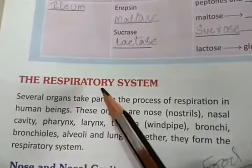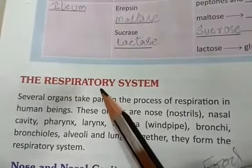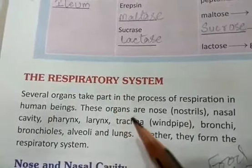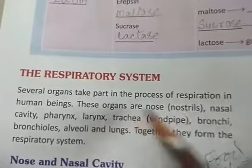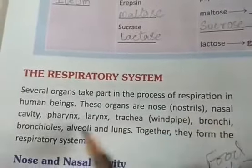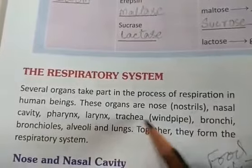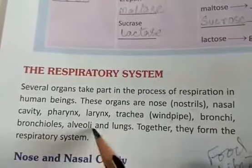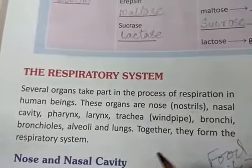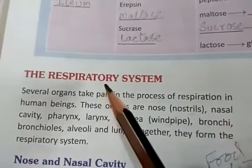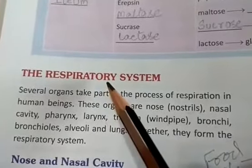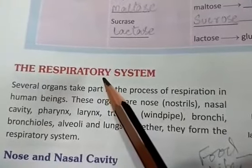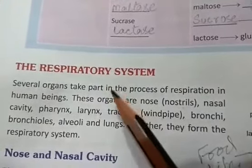In respiration, it involves our breathing process. The organs required are: nose, nostrils, nasal cavity, pharynx, larynx, trachea (the windpipe), bronchi, bronchioles, alveoli, and lungs. We will see how gases enter our body and how waste gases come out of the body.